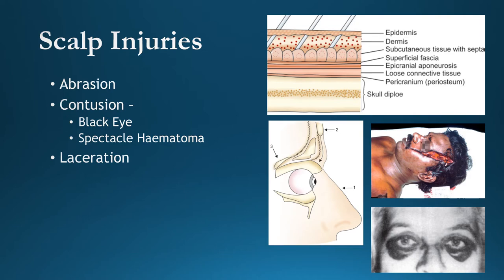Spectacle hematoma results from fracture of the anterior cranial fossa. Laceration is also seen on the scalp; severe lacerations occur when incisions reach the skull. The face is highly vascular, pumping blood against gravitational pull, which is why heavy bleeding is seen in facial injuries. This constitutes laceration in the scalp and facial injury categories.